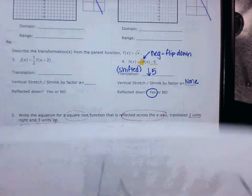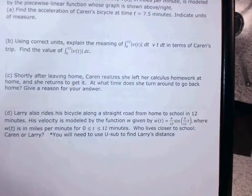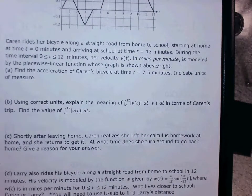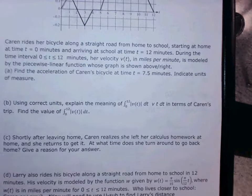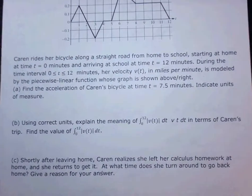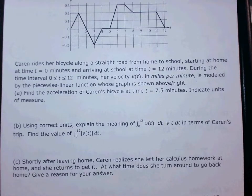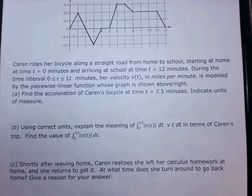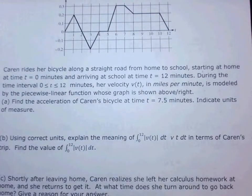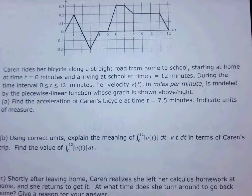We're going to skip this page for a second and come back to it. We're going to do the word problem on the back next. It's a nice little review. Karen rides her bicycle along a straight road from home to school, starting at home at time t equals 0 minutes and arriving at school at time t equals 12 minutes. During the time interval 0 to 12 minutes, her velocity V of T, in miles per minute, is modeled by a piecewise linear function whose graph is shown.